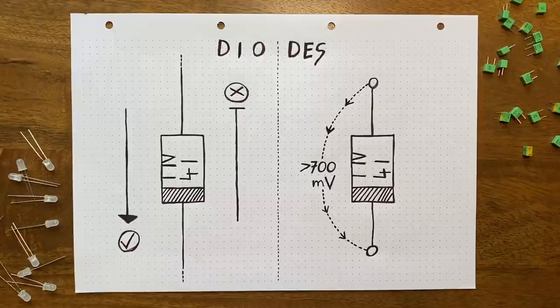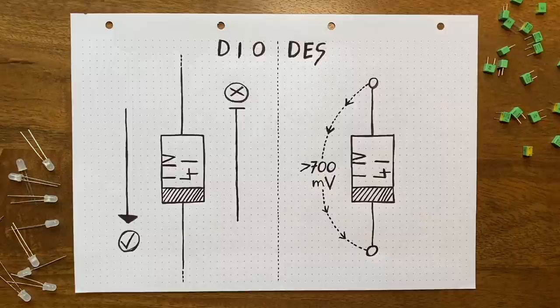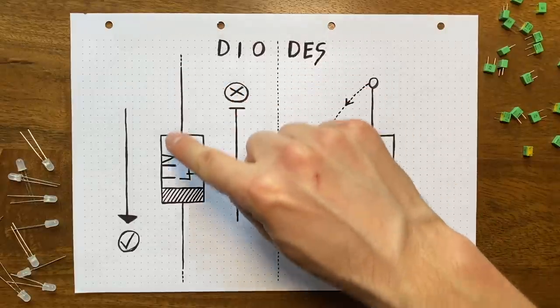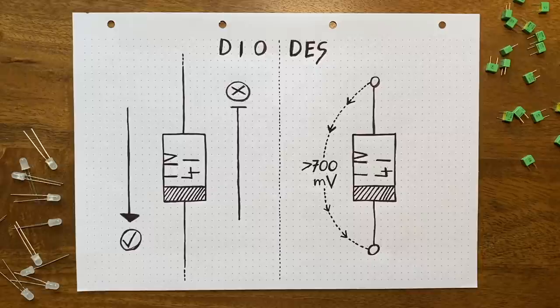If you look that up online, chances are the first thing you'll read is that a diode is an electrical component that allows the flow of current in only one direction. So essentially, a kind of one-way street for electricity. Now, while this is of course true, it's also an oversimplification.